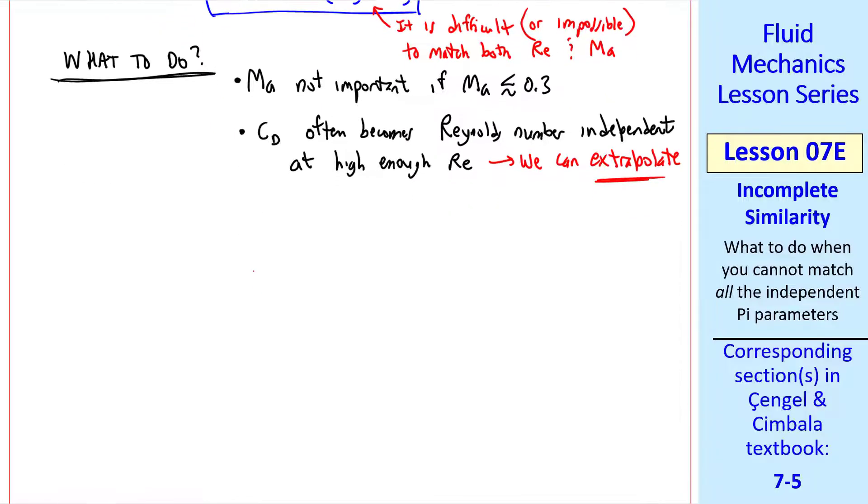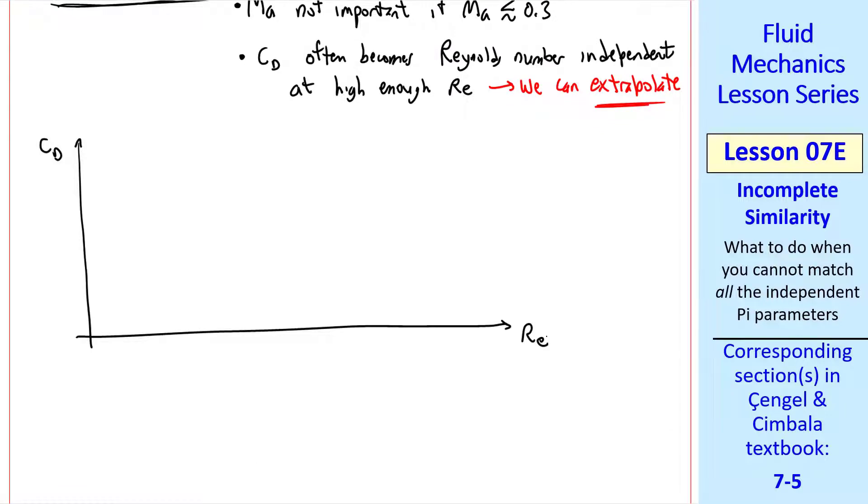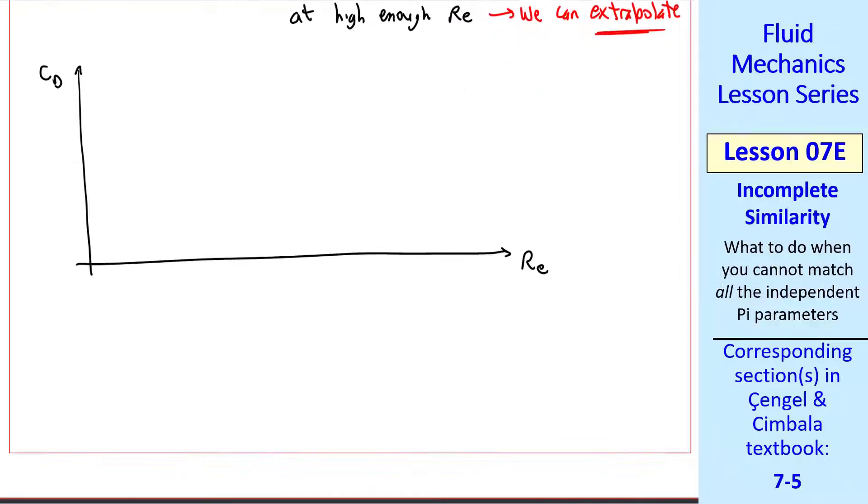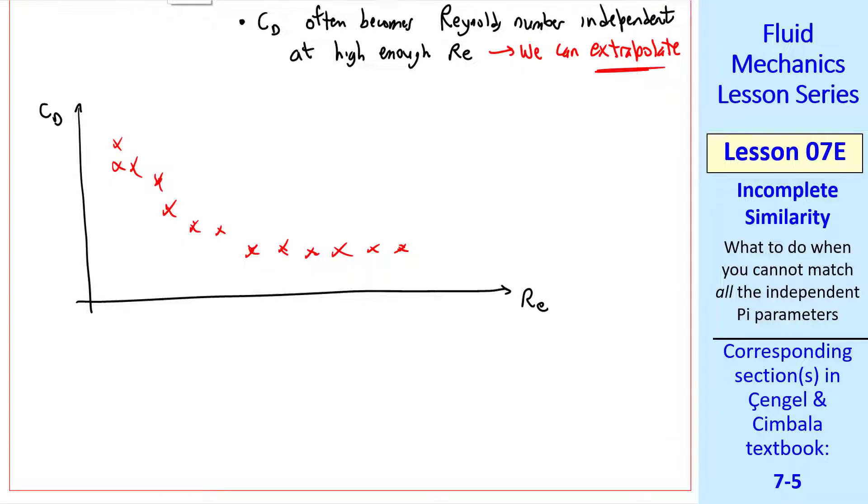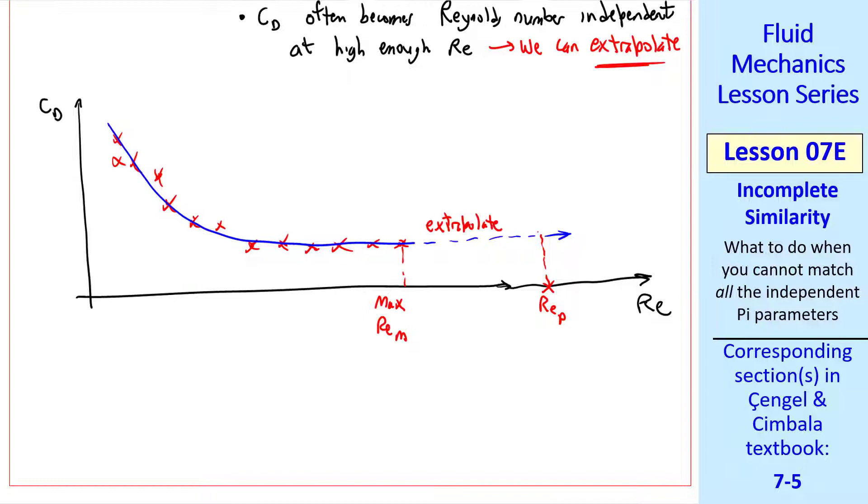I'll show two common cases. Suppose we do some wind tunnel tests and plot CD as a function of Reynolds number. We usually have scatter at low Reynolds number, but then we see that the data tend to level off. If I draw a smooth curve through these data, we can extrapolate to higher Reynolds numbers. Suppose this is the prototype Reynolds number, but this is the maximum model Reynolds number we can achieve. Since the data level off, we can extrapolate. This would be the predicted CD of the prototype.